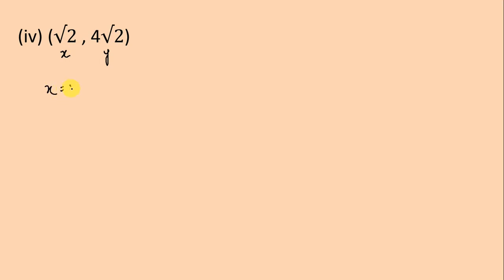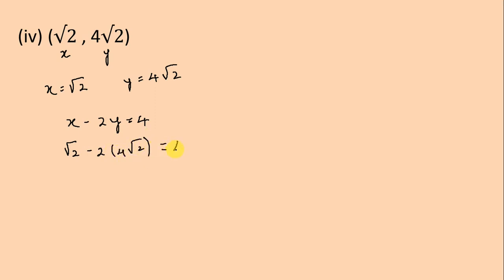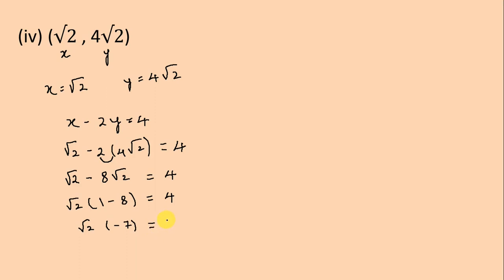Let's move to the next part. Here x = √2 and y = 4√2. We write our equation: x minus 2y is equal to 4. Substituting: √2 minus 2 times 4√2 equals √2 minus 8√2 equals 4. Taking √2 common: √2 times (1 minus 8) equals 4, giving minus 7√2. Since minus 7√2 is not equal to 4, therefore (√2, 4√2) is not the solution of the equation.